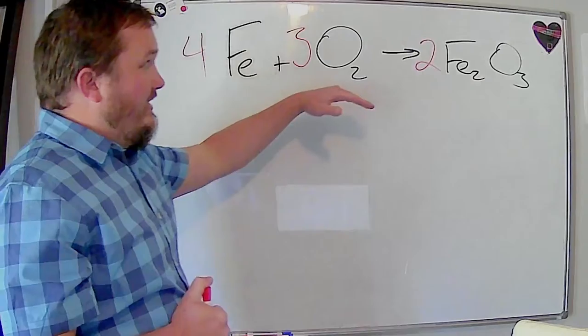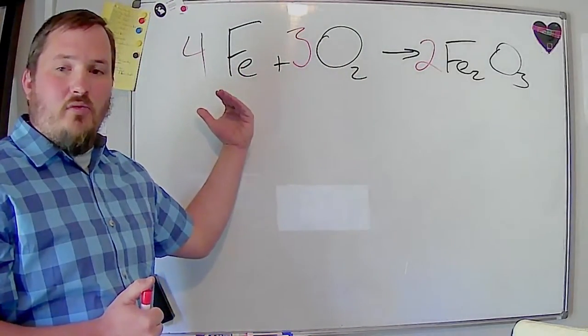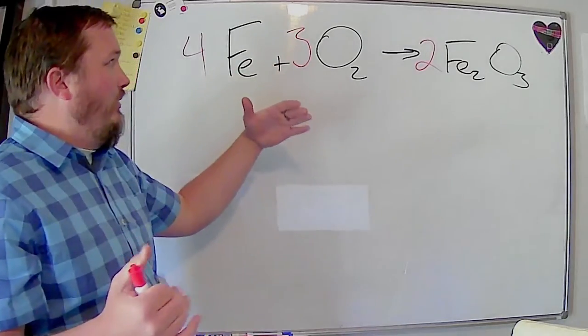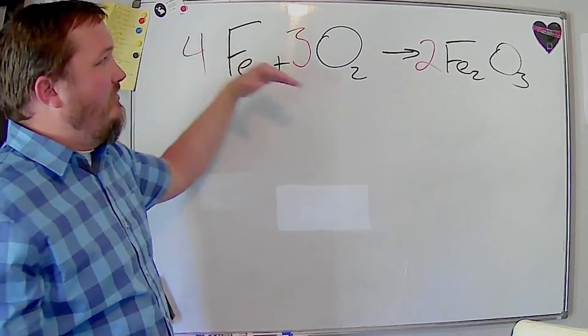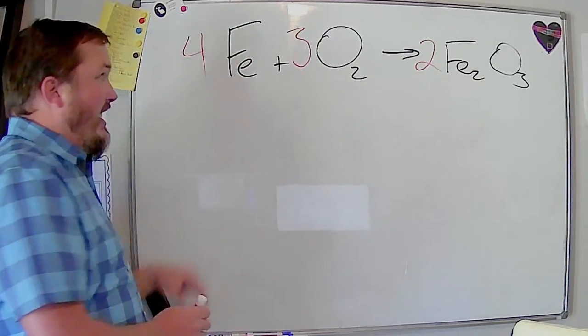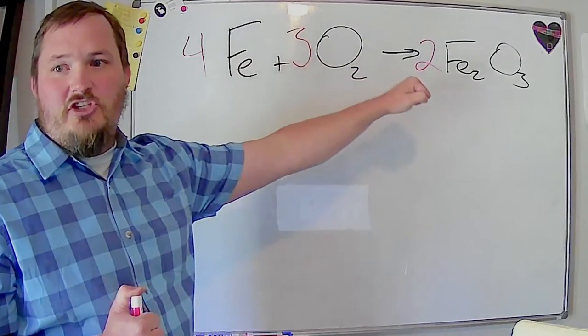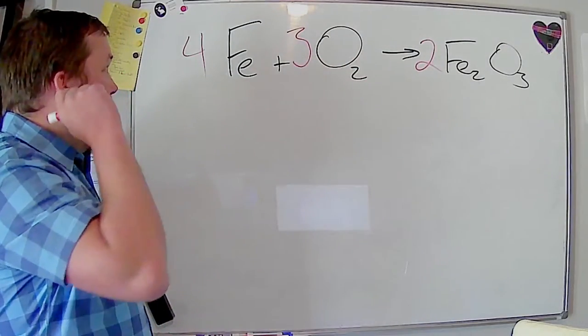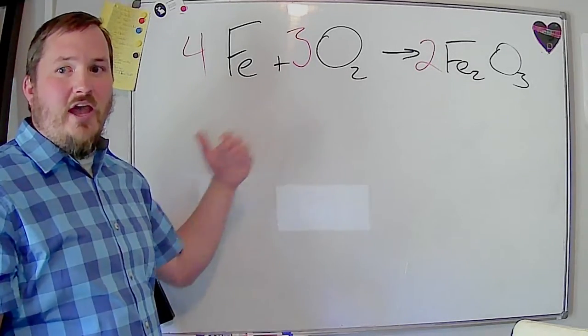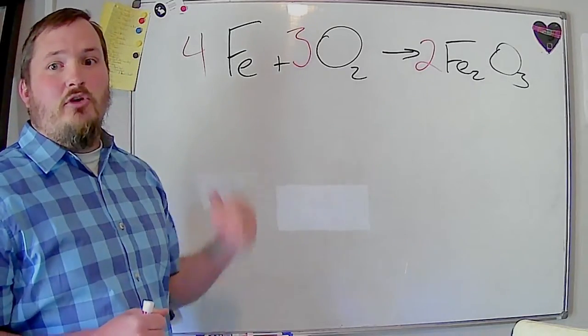So conservation of mass is what led us to balancing this way. We know we can't make atoms or get rid of atoms just willy nilly. We have to make sure we have the same number of atoms before and after. But now that we have it balanced, these coefficients actually give us a lot of information as to how much product we can make or how much of a reactant is going to get used up. And it really is very similar to a recipe.